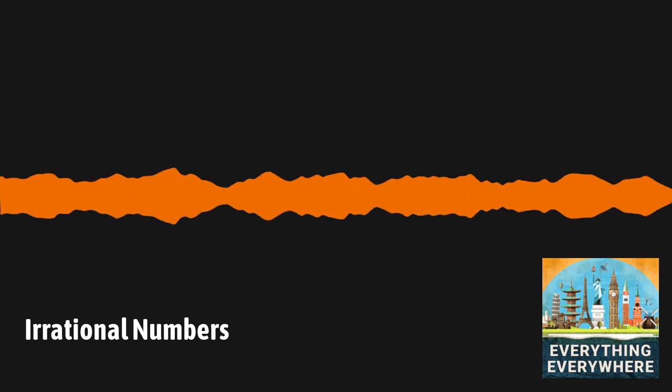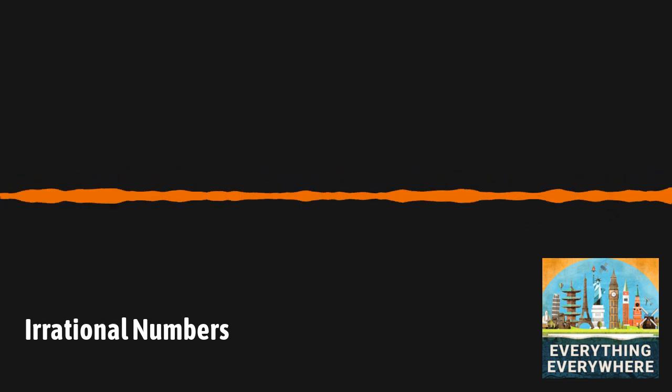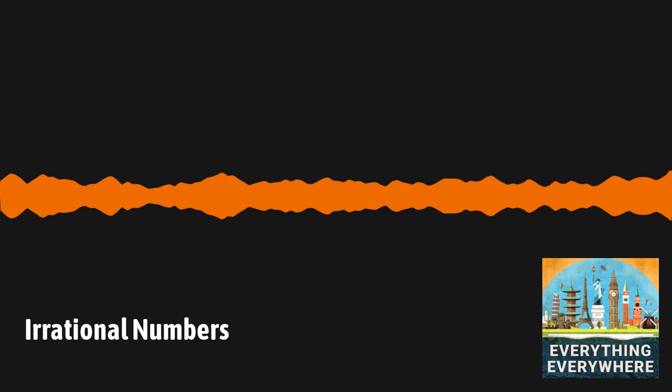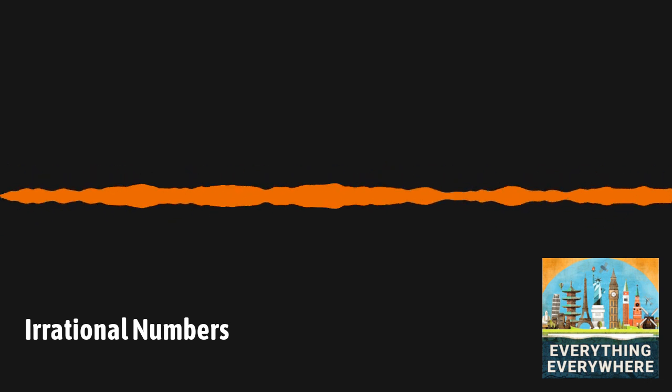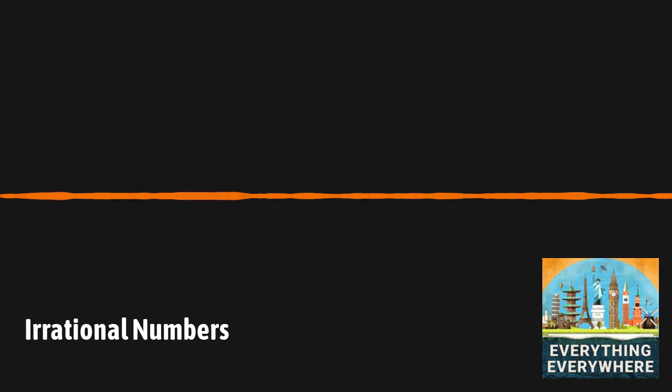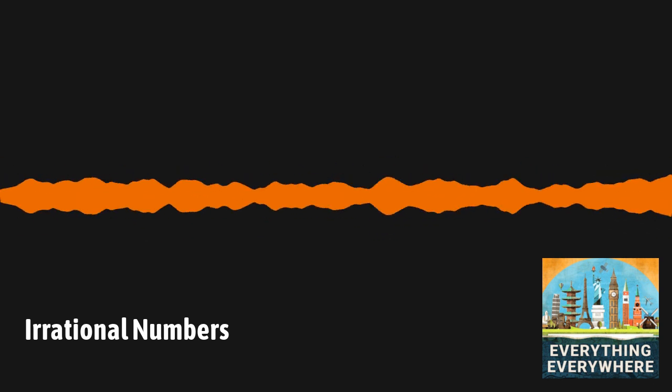Finally, in the circle outside of the rational numbers is the real numbers. The real numbers include all of the rational numbers, and the subject of this episode, all of the irrational numbers.